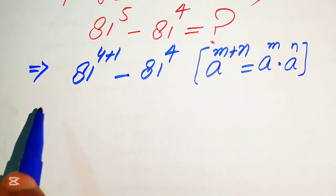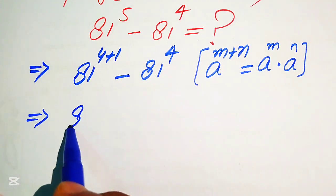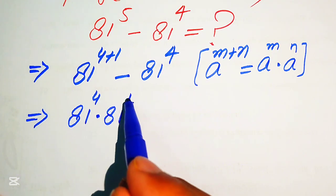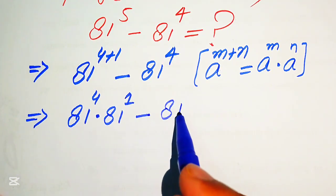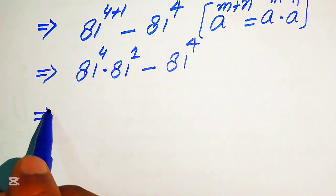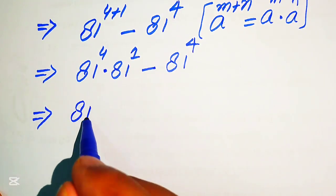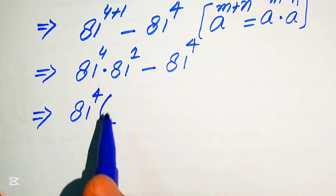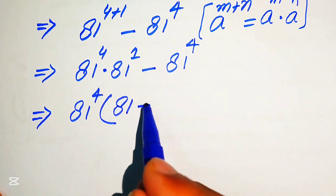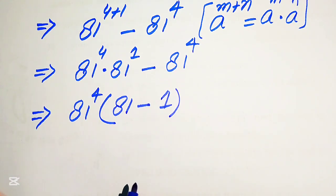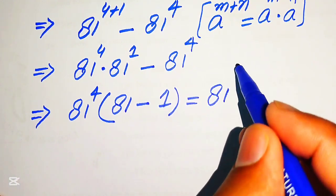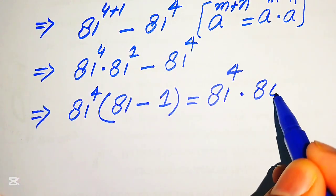According to this exponent law, we break the exponent and write it as 81 to the power of 4 multiplied by 81 to the power of 1, minus 81 to the power of 4. Now we take 81 to the power of 4 as a common factor, and the remaining values give us 81 minus 1. So we have 81 to the power of 4 multiplied by 80.